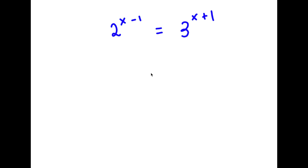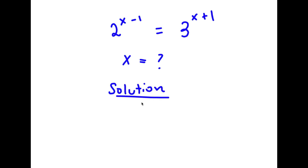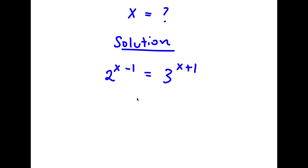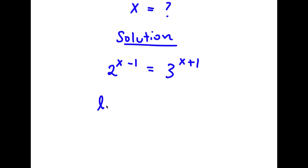So in this problem, I have 2 to the power of x minus 1 is equal to 3 to the power of x plus 1. I want to find the value of x. I'm going to take the log on both sides, so I have log 2 to the power of x minus 1 is equal to log 3 to the power of x plus 1.